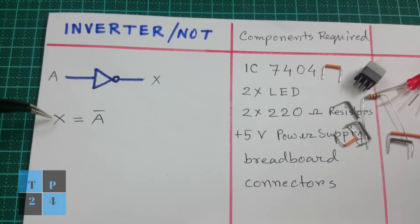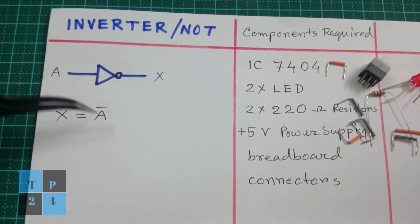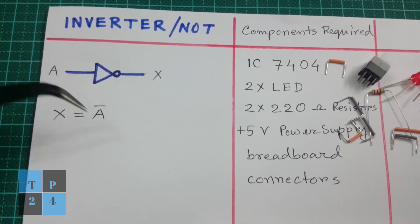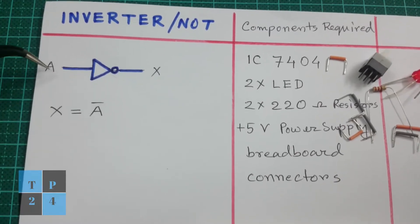This is the Boolean expression. It says x equals A bar. That means the output will be inverted from the input.